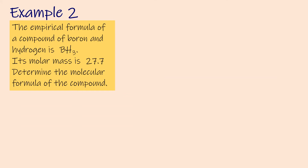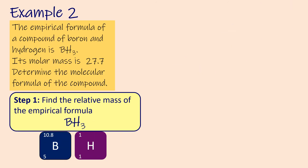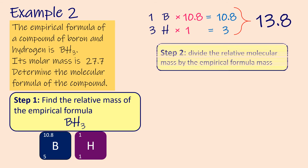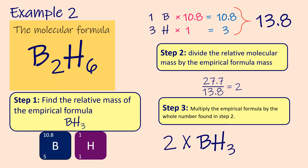Example 2: The empirical formula of a compound of boron and hydrogen is BH3. Its molar mass is 27.7. Determine the molecular formula of the compound. Step 1: find the relative mass of the empirical formula. In BH3 we have one atom of boron of mass 10.8 and three atoms of hydrogen of mass 1. Add up the relative atomic masses to find the empirical formula mass, which is 13.8. Step 2: divide the molar mass by the empirical formula mass — the result should be a whole number. Step 3: multiply the empirical formula by that whole number. The result, B2H6, is the molecular formula.